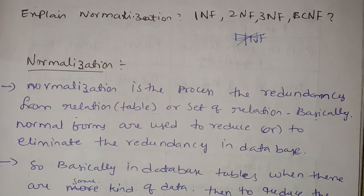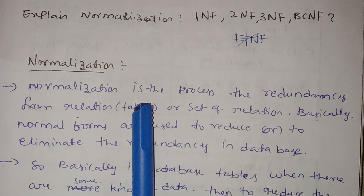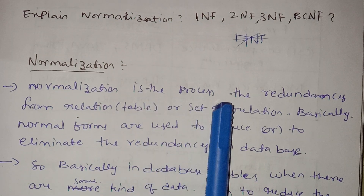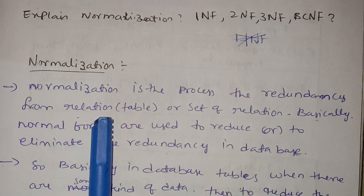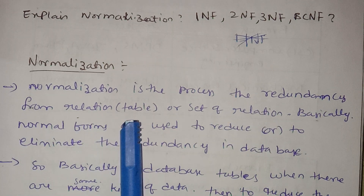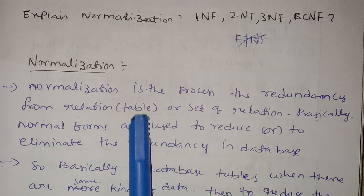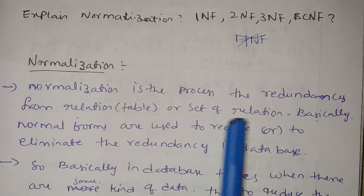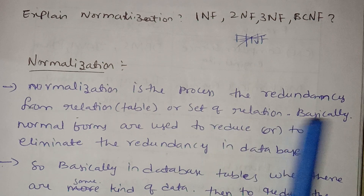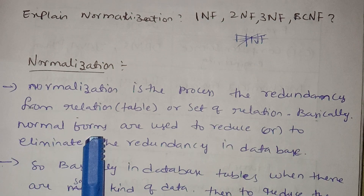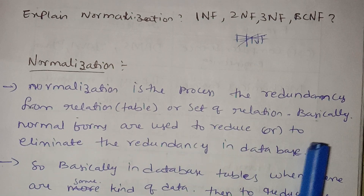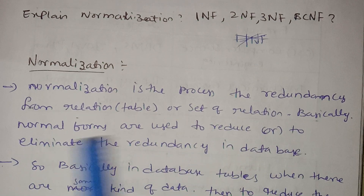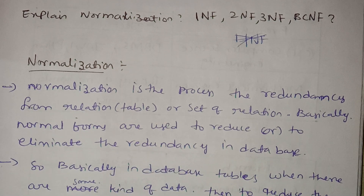What is normalization? Normalization is the process of reducing redundancy from the relation table or the set of relations. Basically, normal forms are used to reduce or eliminate the redundancy of the database.